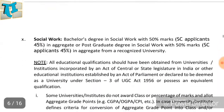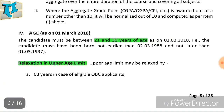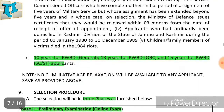The age limit is 21 years to 30 years as of 1st March 2019. Age relaxation: SC/ST - 3 years, Benchmark Disability - 10 years, OBC - 13 years, SC/ST - 15 years.